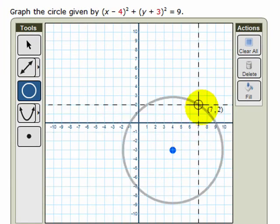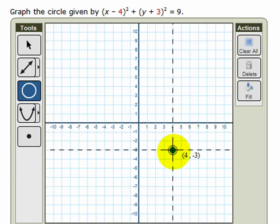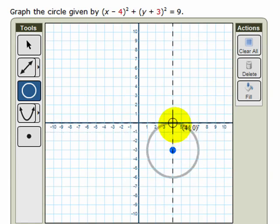Notice that as I move the cursor in and out, the circle becomes bigger and smaller. So by moving 3 units away from the center in any direction—up, down, left, or right—we can plot another point that's on the circle.